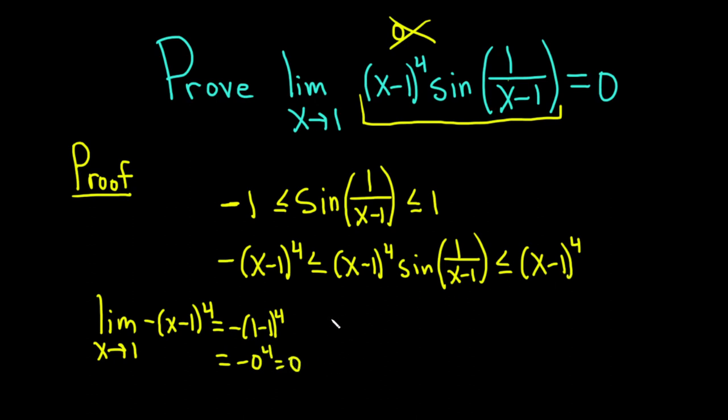Likewise, we can do the same thing with the function on the right-hand side. We can take the limit as x approaches 1 of x minus 1 to the fourth power. And again, we can just plug in the 1 here. So we get 1 minus 1 to the fourth power, which is 0 to the fourth power, which is 0.